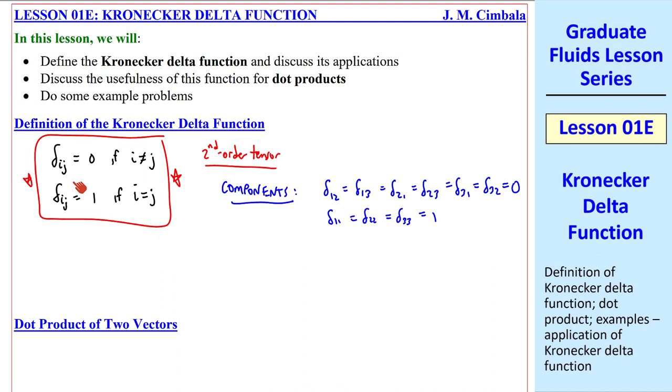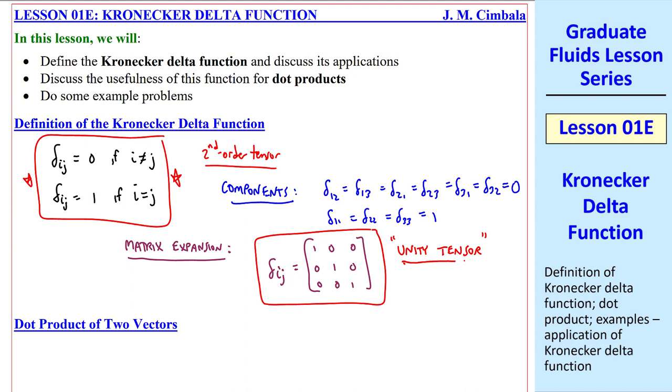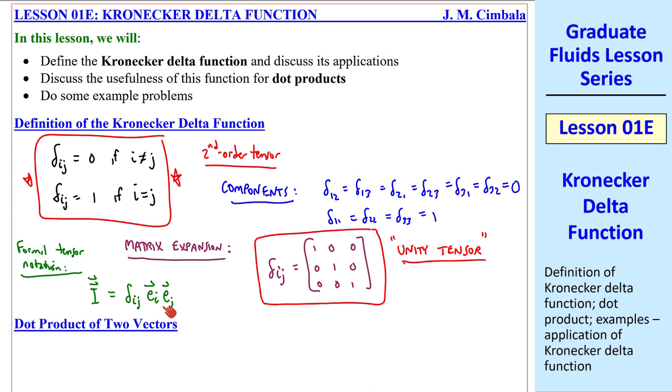If we expand it out in matrix form, delta ij is simply 1,0,0; 0,1,0; 0,0,1. It's also called the unity tensor. In formal tensor notation, we write it as capital I, two arrows, equal delta ij, ei vector, ej vector, where these two are the unit vectors in the i and j directions. And this combination, as you may recall, is a dyad.